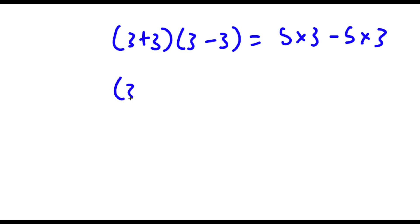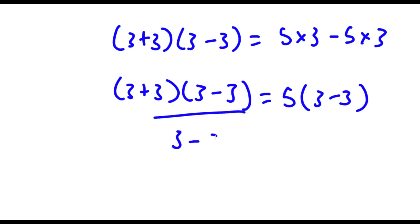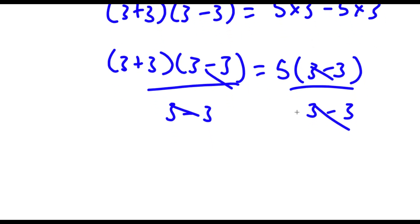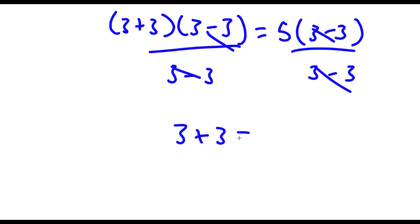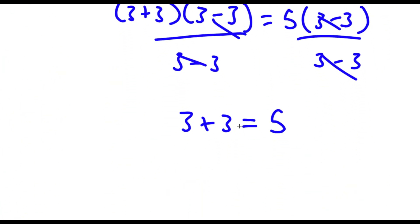Now from my right-hand side, I'm going to go ahead and factor out 5. So if I factor out 5, I get 5 times (3 minus 3). All I did was divide: 5 times 3 divided by 5 is 3, and negative 5 times 3 divided by 5 is negative 3. Now if I divide both sides by (3 minus 3), these two cancel out and these two cancel out. So I'll be left with 3 plus 3 is equal to 5. And as you can see, we just proved this to be right — 3 plus 3 equals 5.